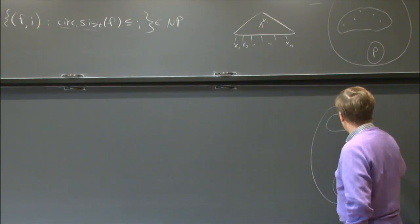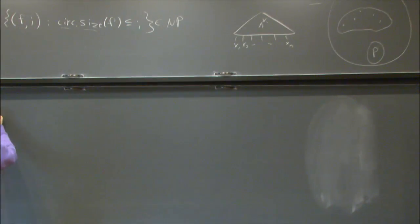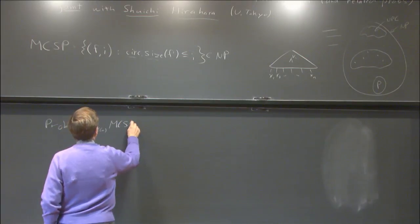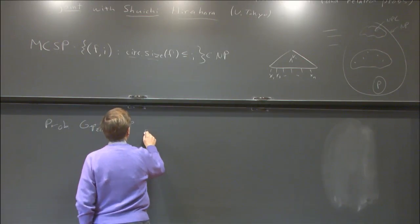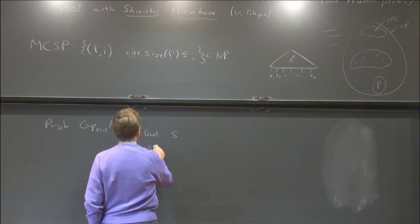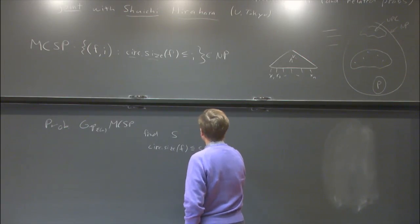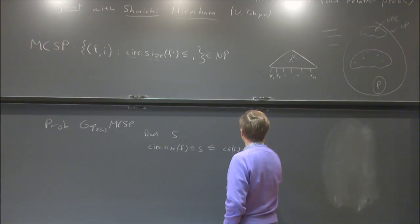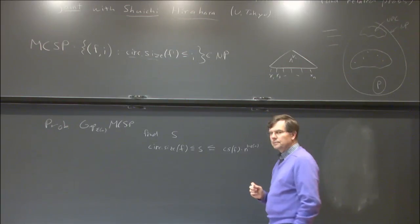The question is: what about problems that are fairly natural? The problem we're going to be considering is gap-epsilon MCSP, where epsilon is going to be a function of the input length — it's really an approximation problem. You want to find a value S such that the circuit size of your input F is less than or equal to S, and that's less than or equal to the circuit size of F times N to the 1 minus epsilon of N, where N is the length of the input.